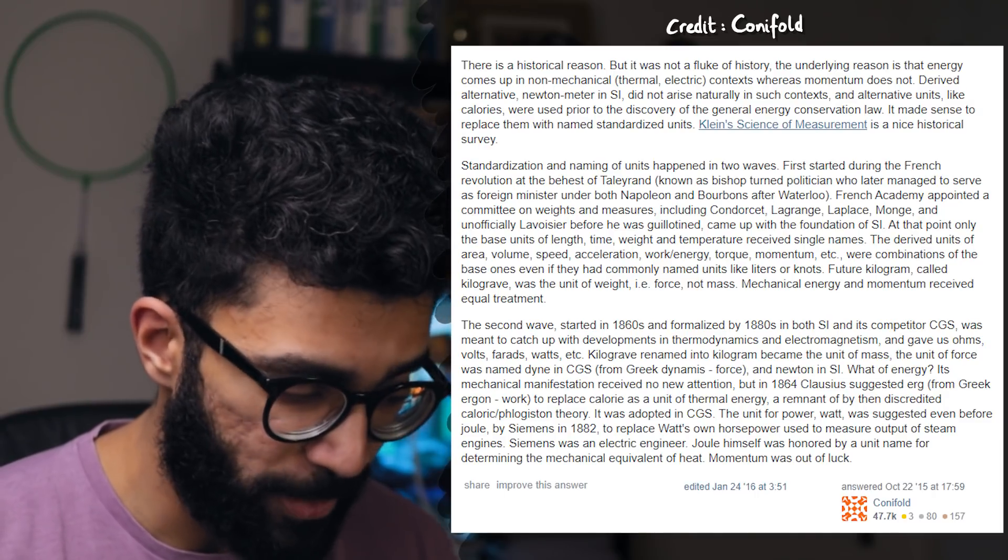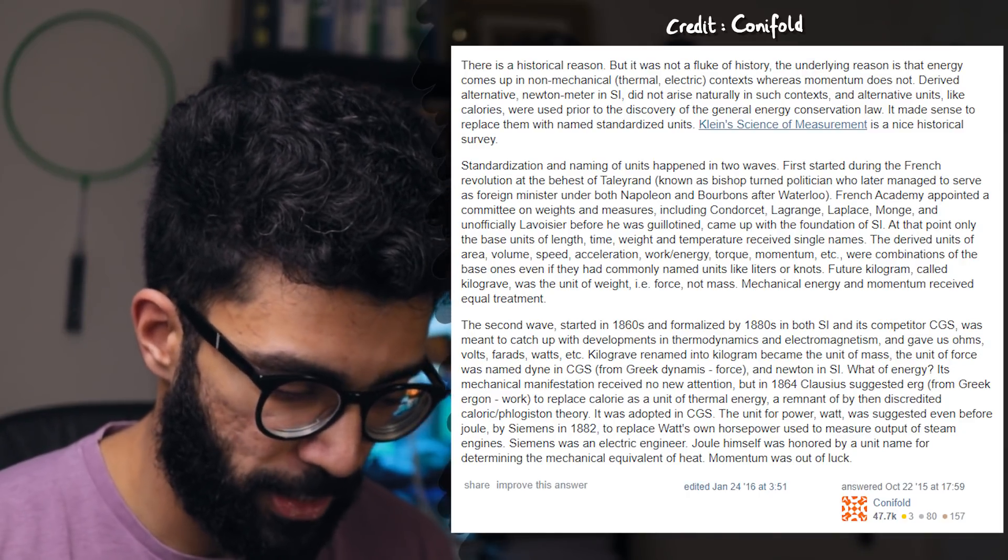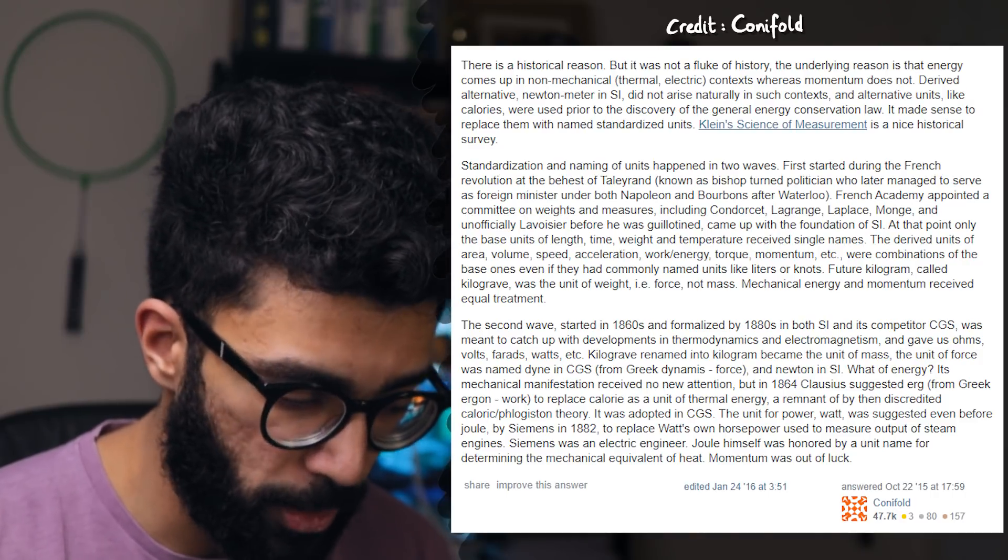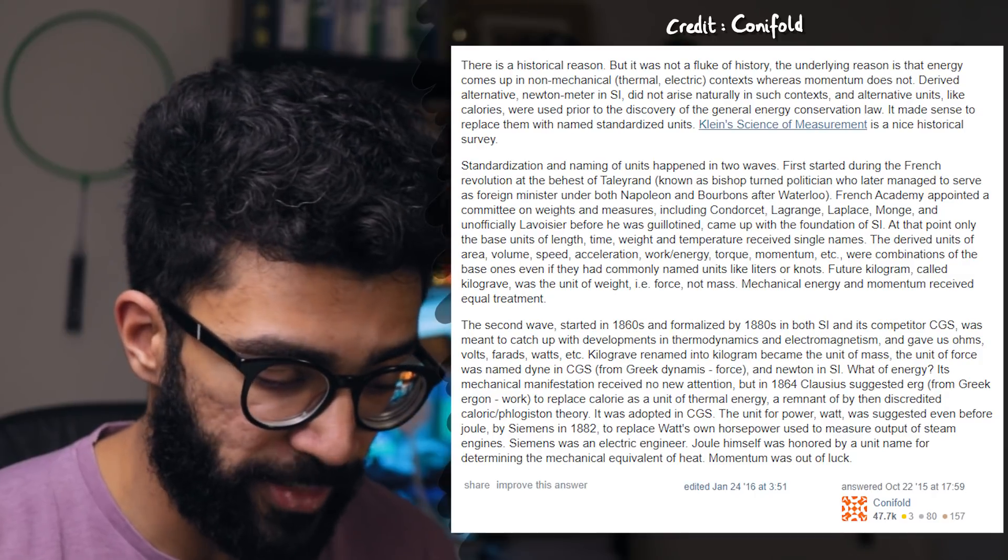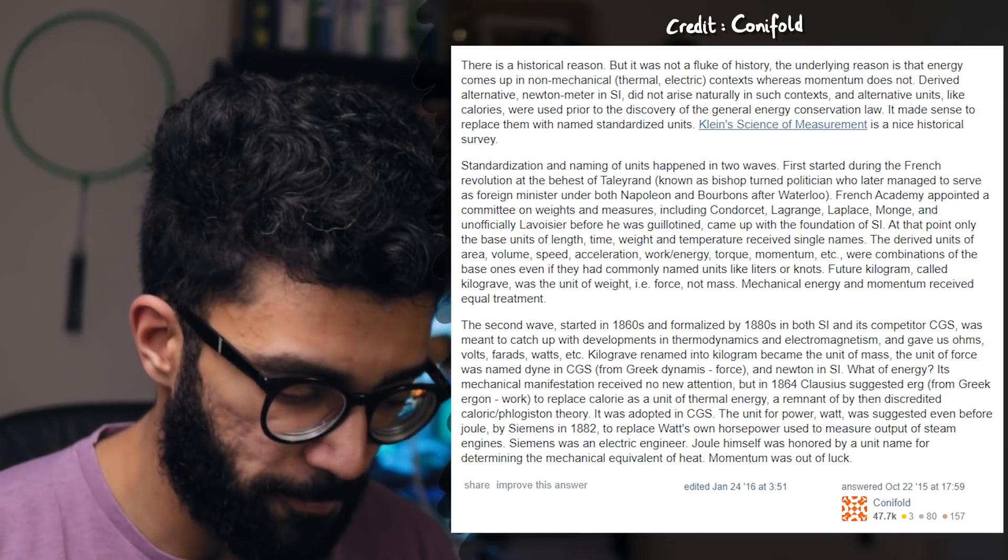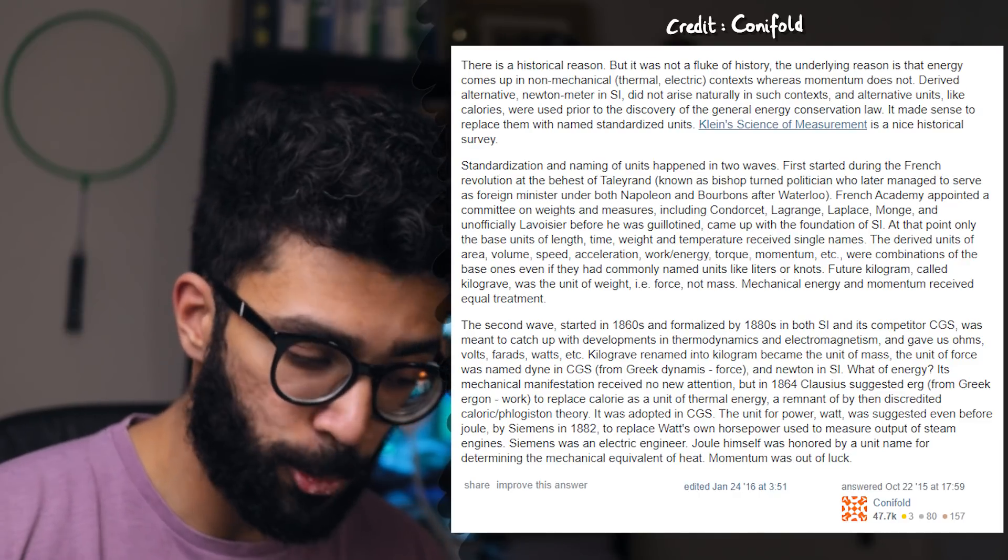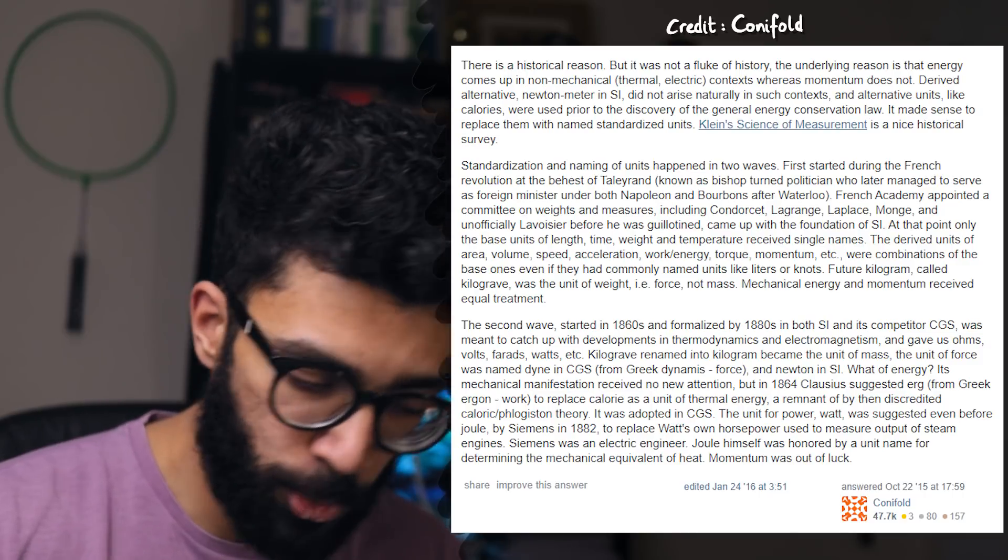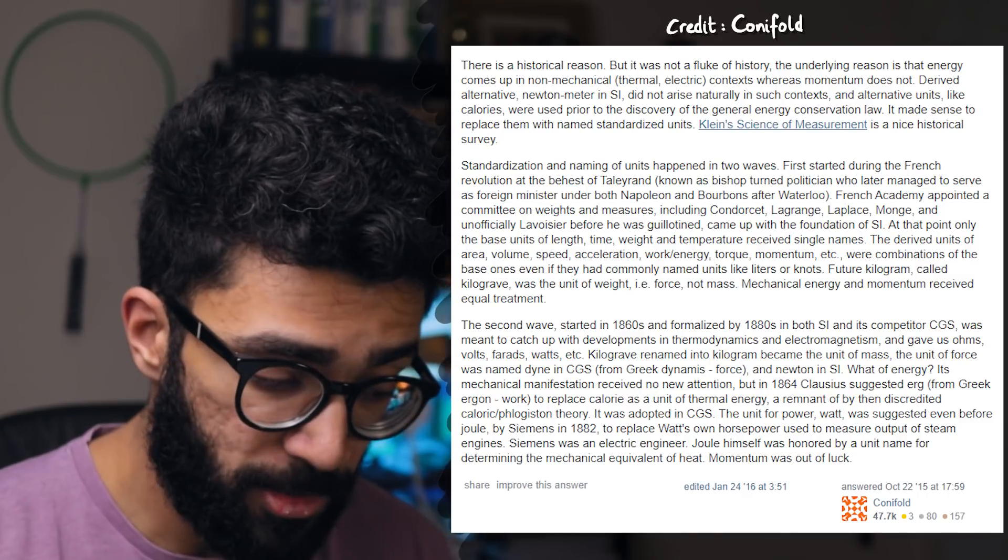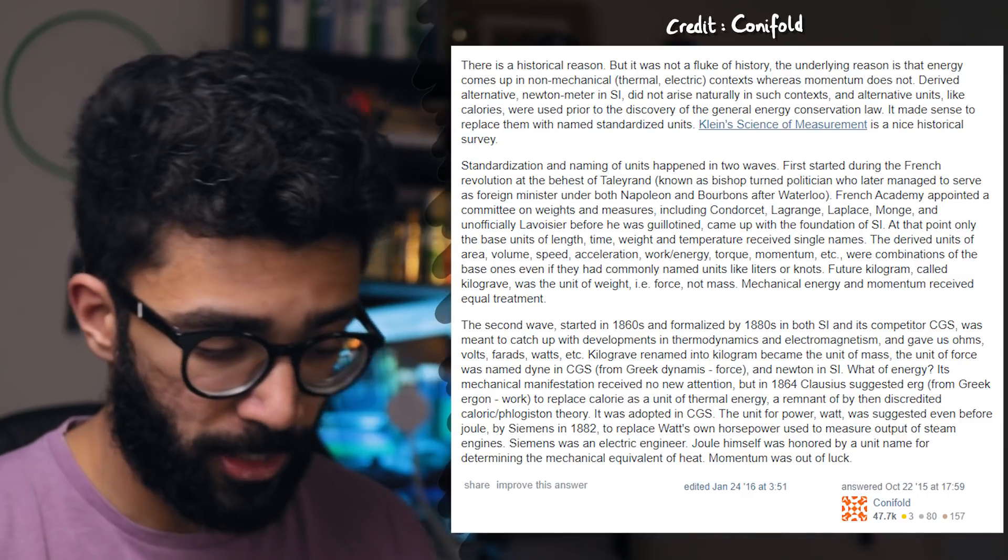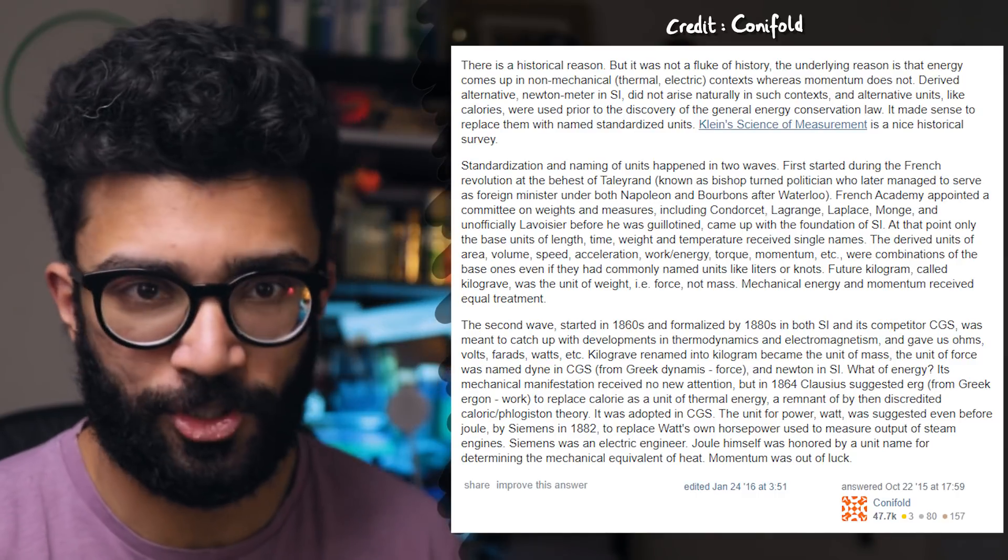Its mechanical manifestation received no new attention, but in 1864, Clausius suggested erg, from Greek ergon, to work, to replace calorie as a unit of thermal energy, a remnant of the by then discredited caloric phlogiston theory. It was adopted in CGS. The unit of power, watt, was suggested even before Joule by Siemens in 1882 to replace Watt's own horsepower unit used to measure output of steam engines. Siemens was an electrical engineer. Joule himself was honored by a unit name for determining the mechanical equivalent of heat. Momentum was just out of luck.